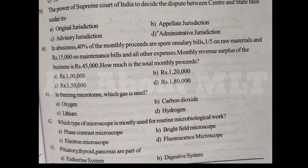Which type of microscope is mostly used for routine microbiological work? Option A Phase contrast microscope, Option B Bright field microscope, Option C Electron microscope, Option D Fluorescence microscope. Answer is Option B Bright field microscope.